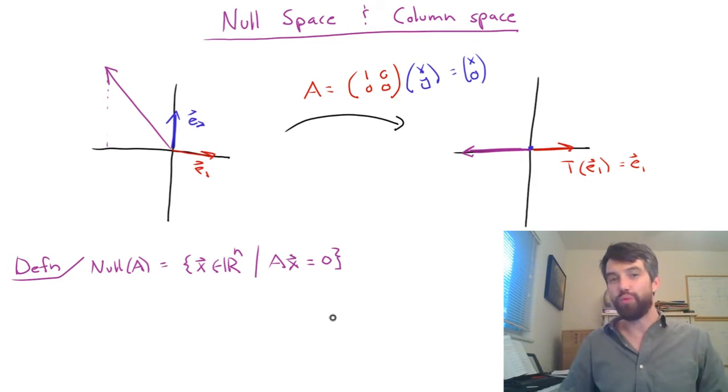And since the X component never changes under my transformation, the null space is all of the vectors right on the Y axis. Any vector on the Y axis, well, the X component doesn't change, so it still stays as X equal to zero, but the Y component is brought down to zero. So in other words, the Y axis is going to be the null space for this transformation.